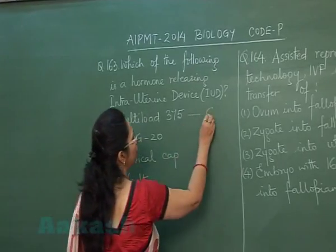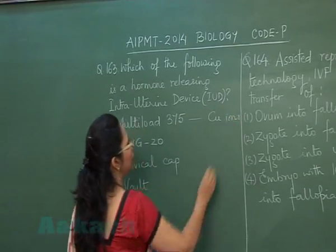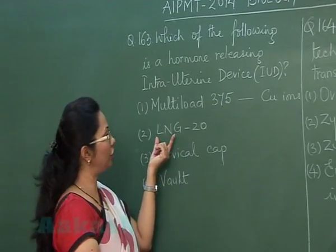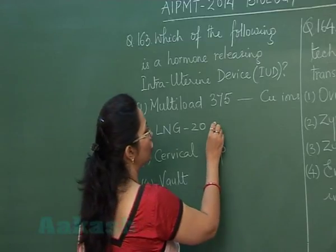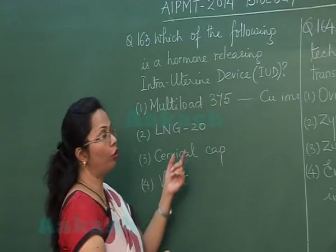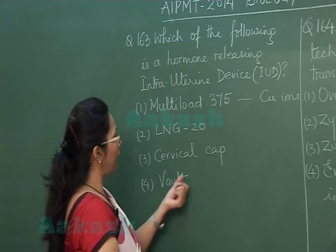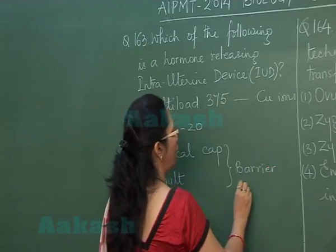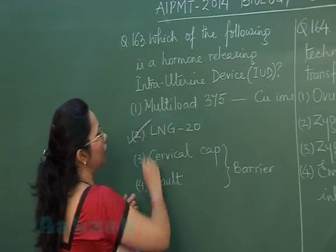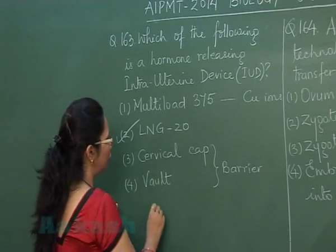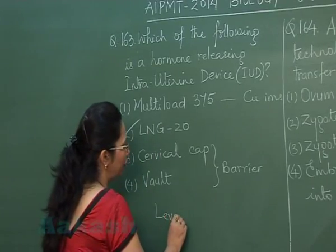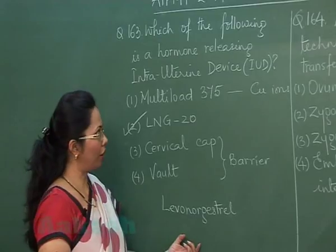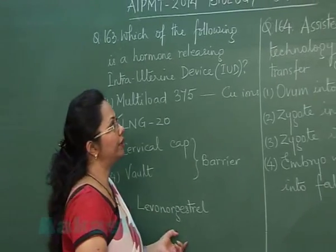LNG-20 releases levonorgestrel, which is a synthetic progesterone, making it a hormone-releasing IUD. Cervical cap and vault are both barrier contraceptives. Therefore, the correct answer is LNG-20, as it releases levonorgestrel, a progesterone analog.